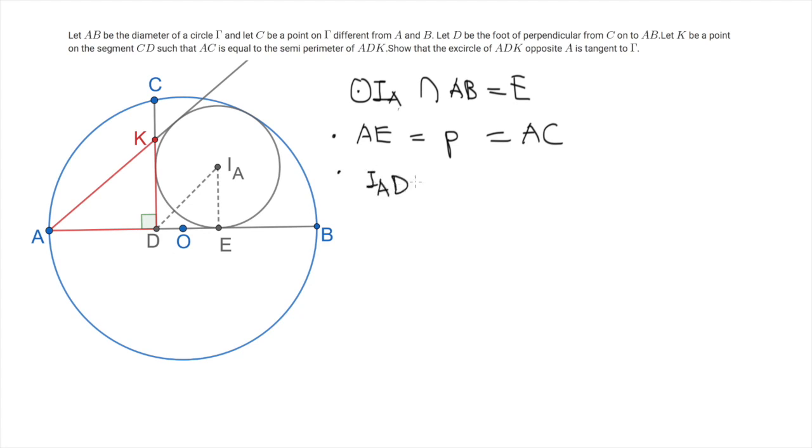Moreover, we know that IAD bisects the angle CDE, which is a right angle. So in particular, the angle IADE equals 45 degrees. And this implies that IAE equals DE.